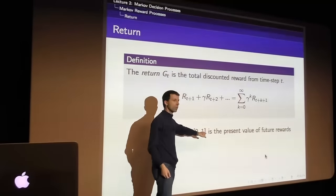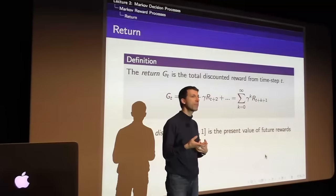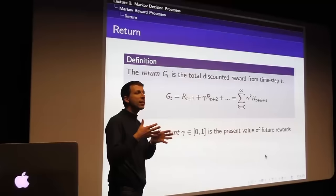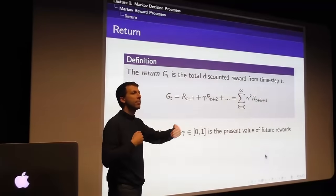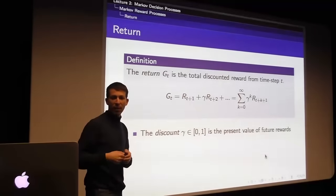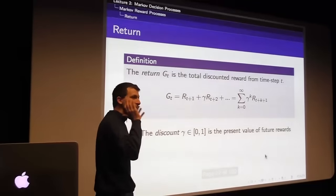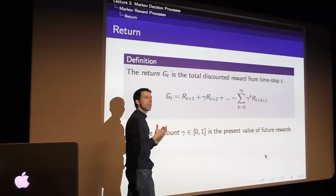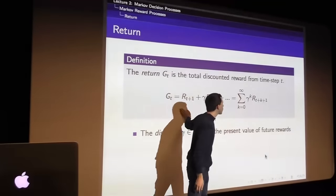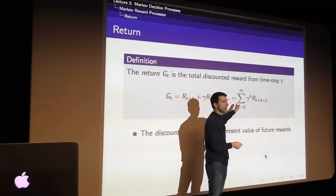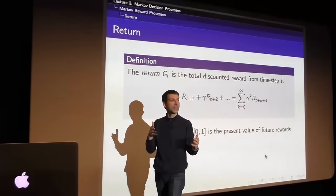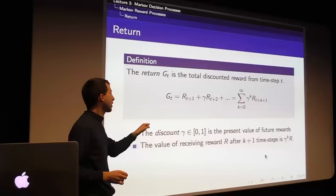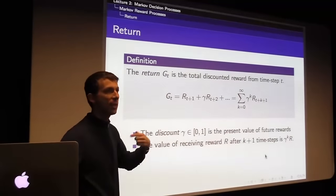The discount factor must be between 0 and 1. It tells us the present value of future rewards — how much I care now about rewards I'll get in the future. A discount factor of 0 is maximally short-sighted: you only look at the immediate reward. A discount factor of 1 is maximally far-sighted: you care equally about all rewards going infinitely far into the future, assuming the process eventually terminates. The value of receiving reward r, k+1 steps later, is gamma-to-the-k times r.